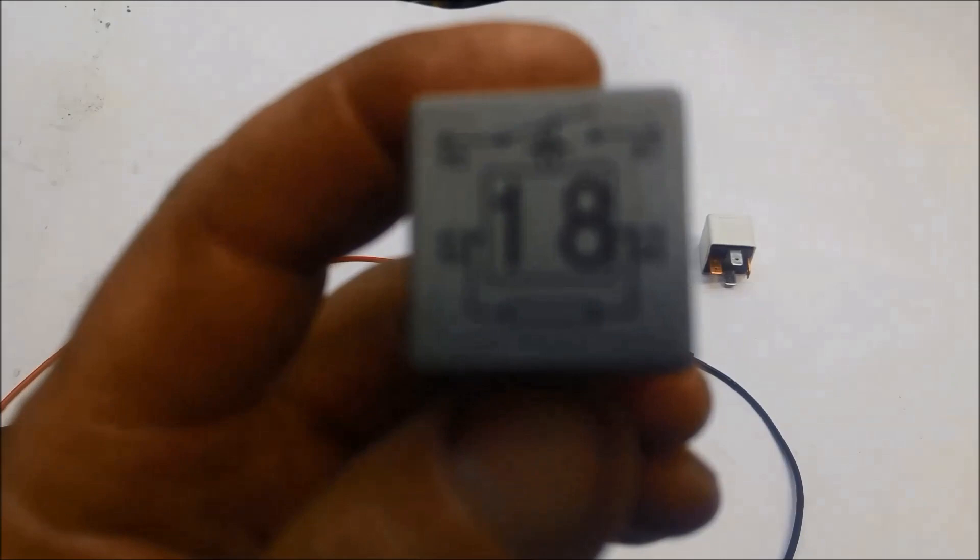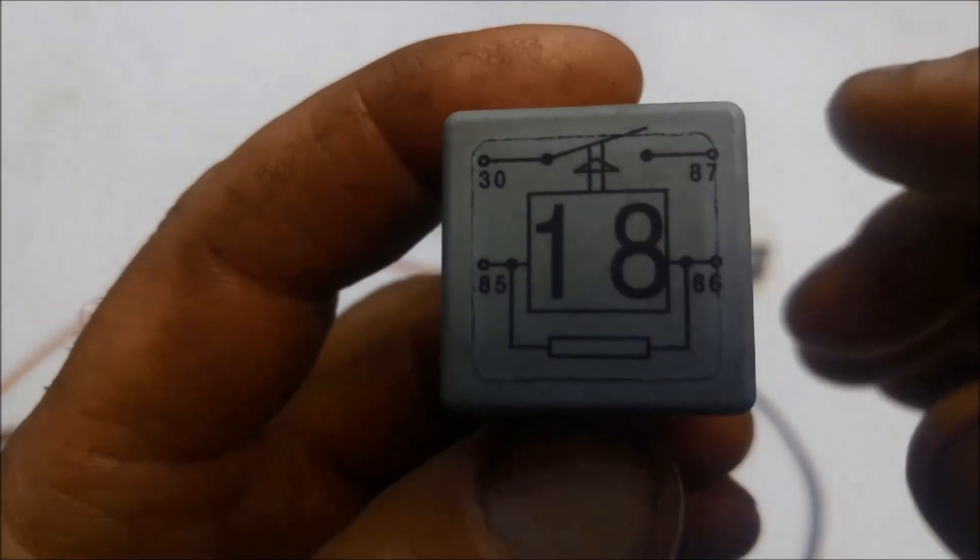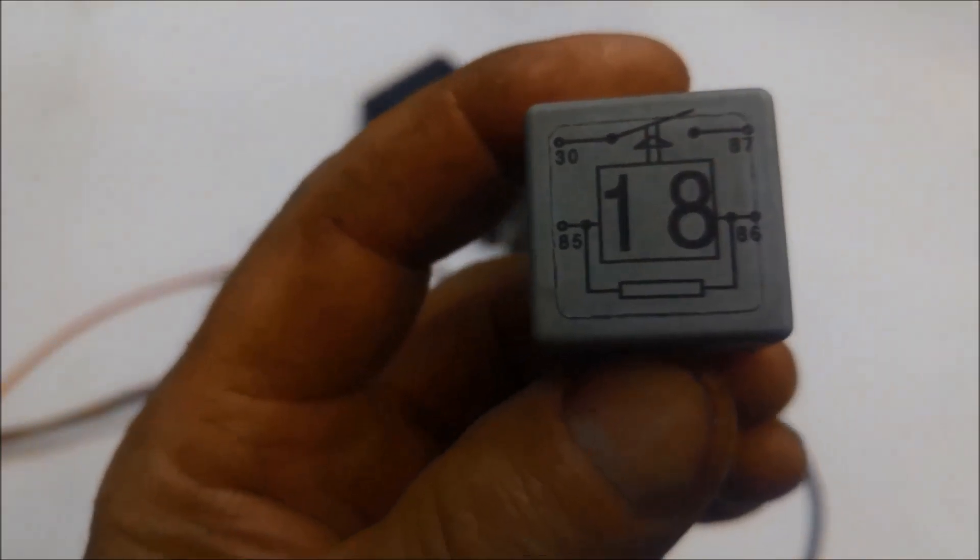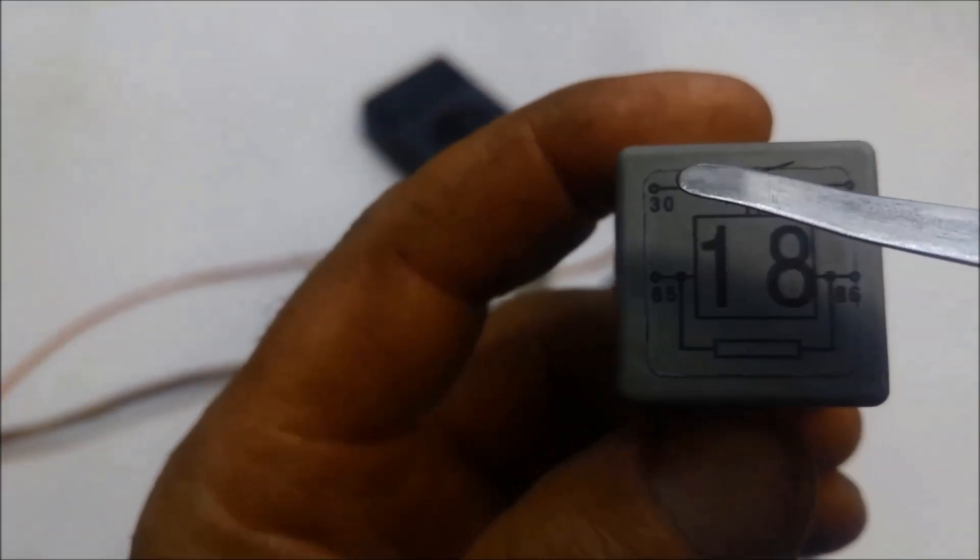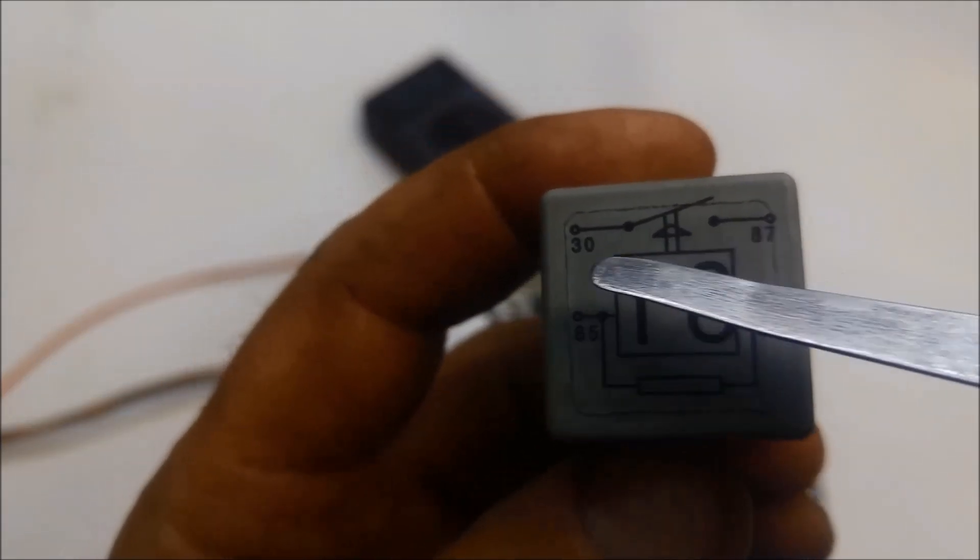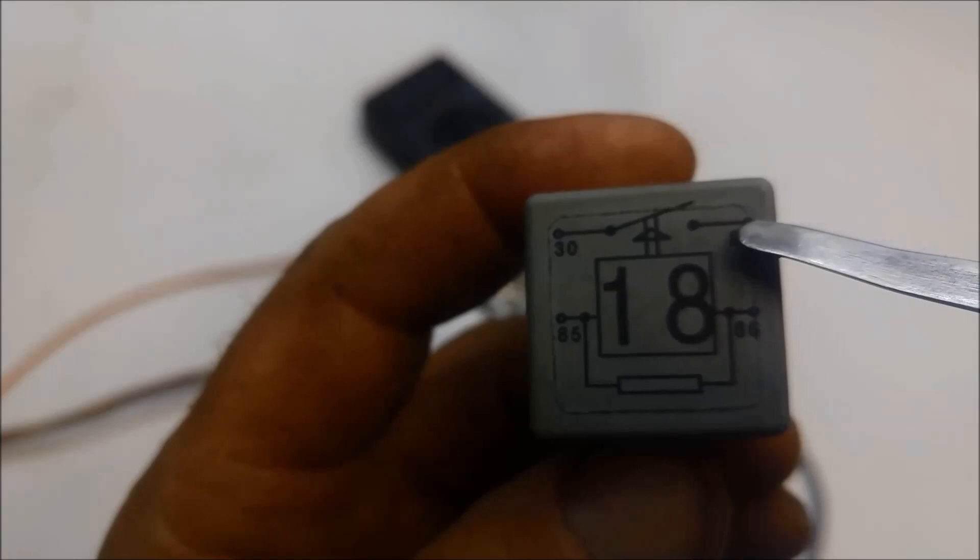Here's one with a better diagram on it. You can see number 30 pin over here, number 87 pin - that's actually a switch there if you have a look.